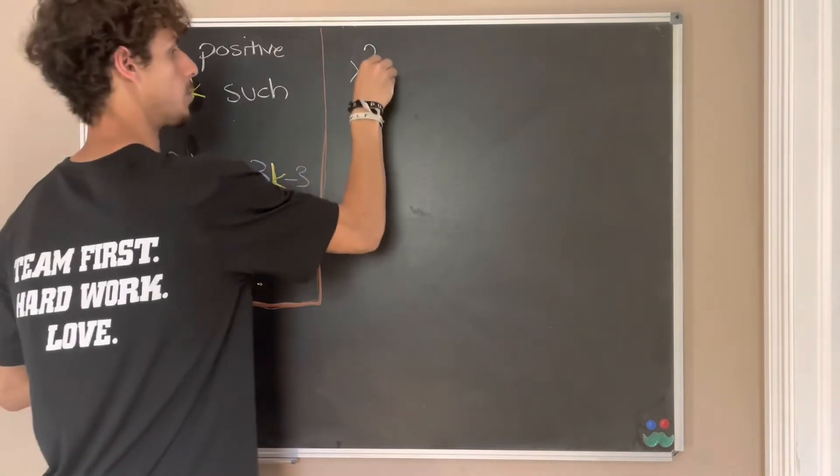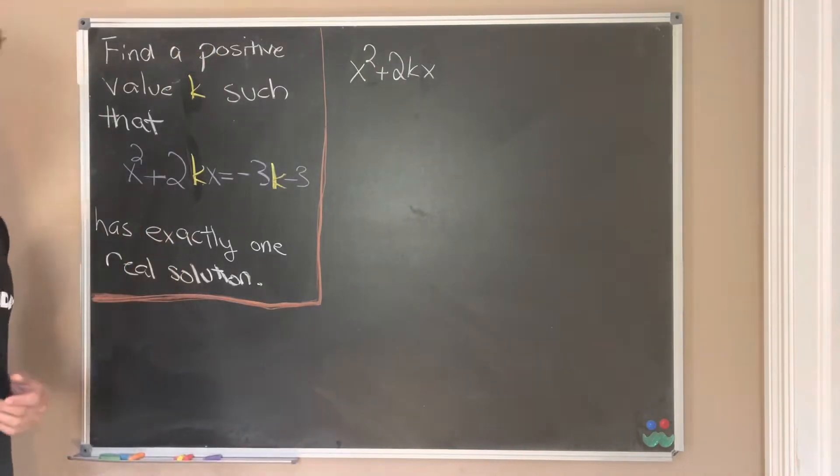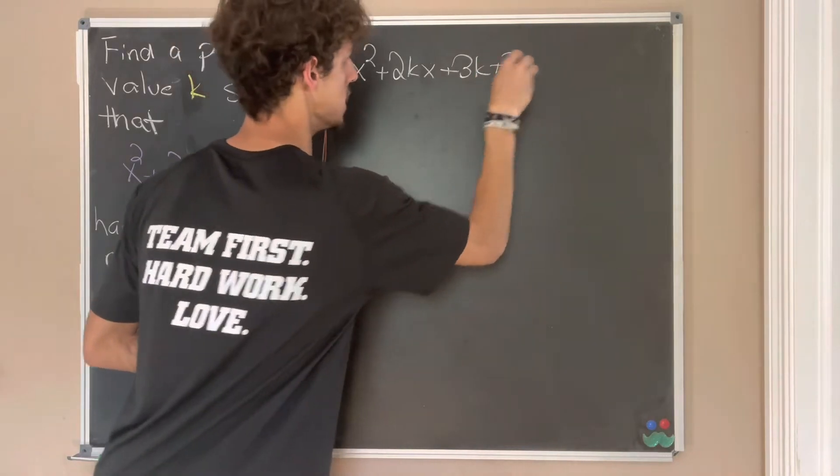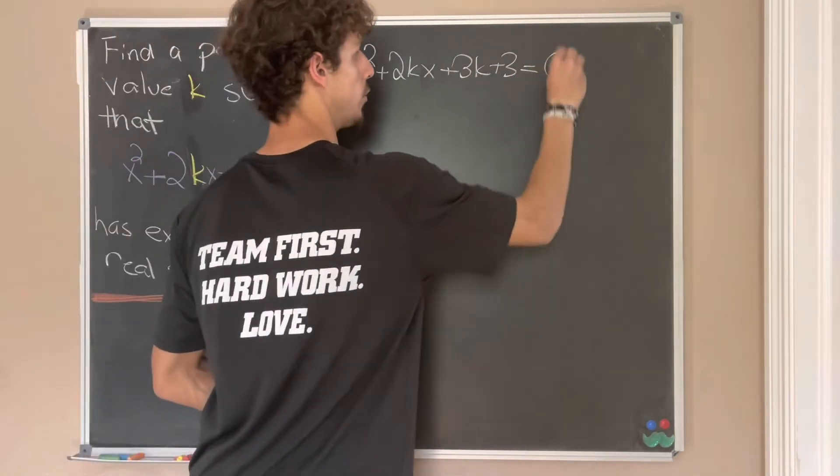So we'll have x squared plus 2kx, that's just from this left hand side unchanged, and we want to add 3k and 3 from this right hand side, but that gives us zero on the right.